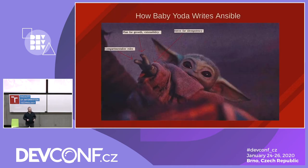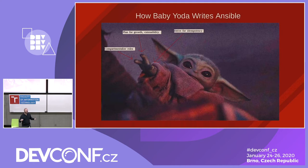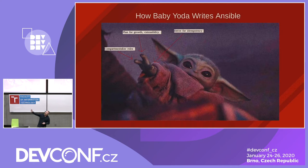So Baby Yoda is really important here — when Baby Yoda writes code, he holds up his little three fingers representing the three major pillars: compartmentalize your roles, plan for growth and extensibility so people can contribute and extend your playbook to do other tasks, and strive for idempotency. Unfortunately, when we write playbooks, we can't do it as well as Baby Yoda. We're going to make a lot of mistakes and bugs along the way.